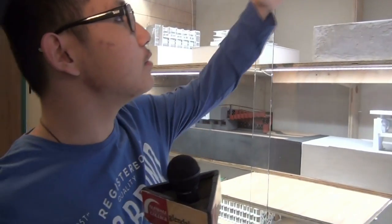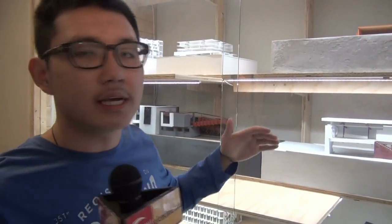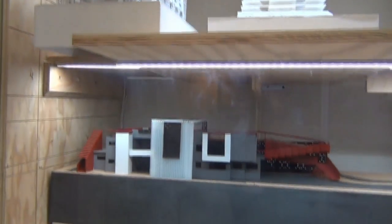For the whole display case, we set it up vertically and horizontally. We have three shelves for the models, and each shelf has a light for lighting up the models.